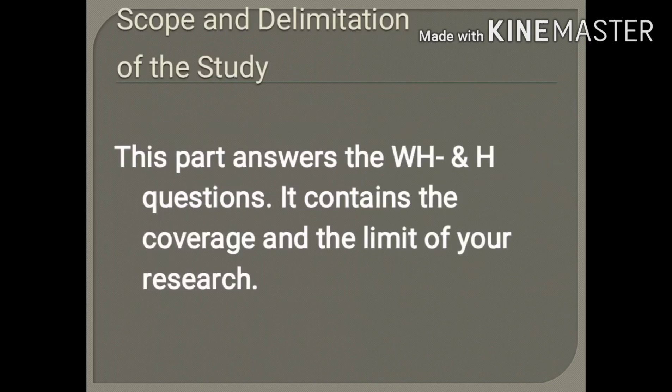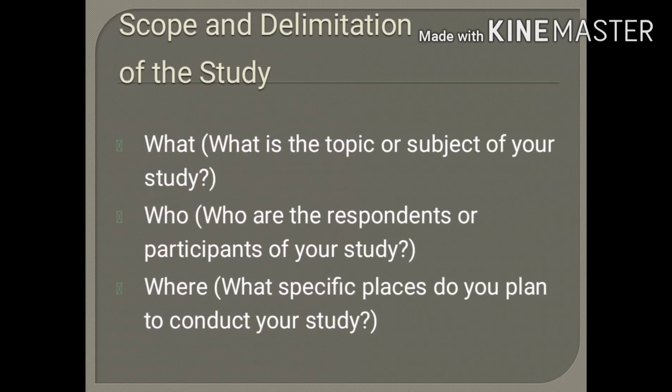In order for my students to easily indicate this part of their research introduction, I ask them to indicate all the answers for the WH and H questions. For the 'what' question, they just have to indicate the topic or subject of their study. For the 'who' question, they just have to provide the respondents or participants. For the 'where' question, they just have to provide all the locations where they can find their participants or respondents.